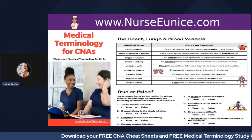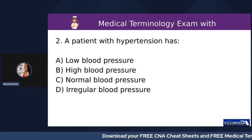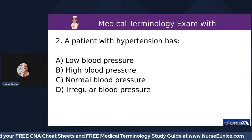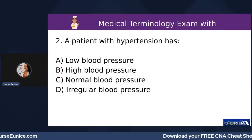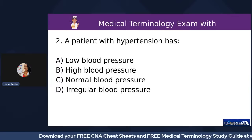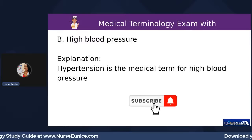Number two: a patient with hypertension — let's talk about the prefix 'hyper.' Does anyone know what 'hyper' stands for? Whenever you see 'hyper' in front of a word, that means it's excessive or increased. So a person with hypertension has: A) low blood pressure, B) low blood pressure, C) normal blood pressure, or D) irregular blood pressure. The answer is high blood pressure — hypertension refers to high blood pressure.